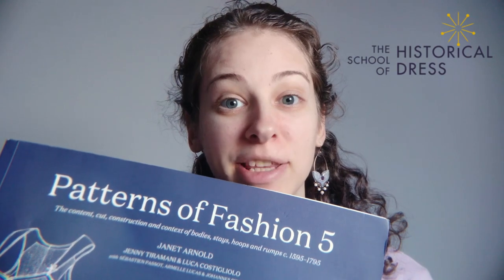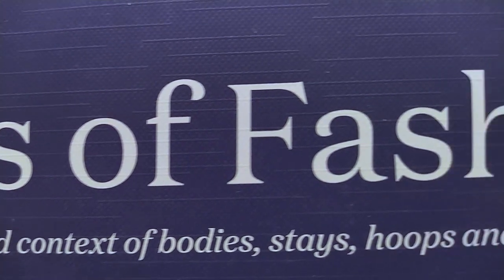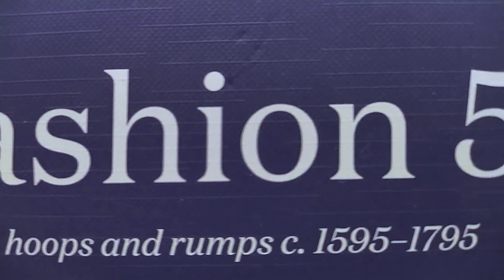I'm going to be using the book Patterns of Fashion Five, which is the love of my life. It is a book released by the School of Historical Dress, about the content, cut, construction, and context of body stays, hoops, and rumps, from circa 1595 to 1795. It is a book with lots of patterns of stays and hoops.